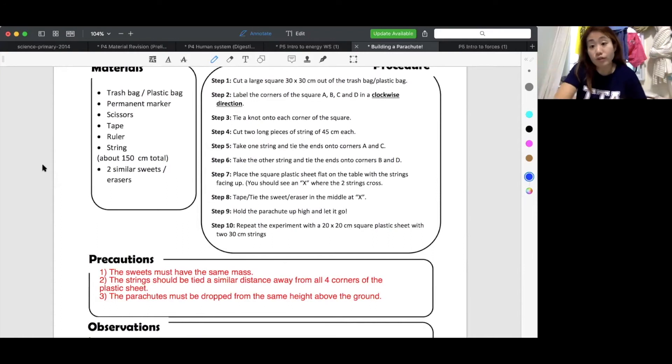The second precaution that I can write is the string should be tied a similar distance away from all four corners. You cannot have strings that is shorter at one end and longer at the other end. Then it will affect the parachute for sure. The strings must all have the same distance. The last one that I can think of is the parachute must obviously be dropped from the same height. You cannot drop them one higher than the other because then it will be an unfair test already. Then you will have two change variables. So all these are the precautions that you have to take note of.